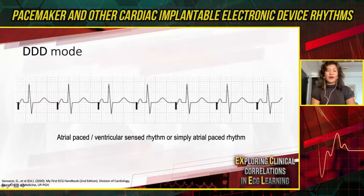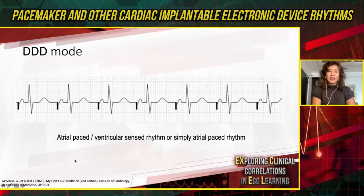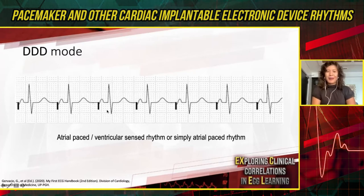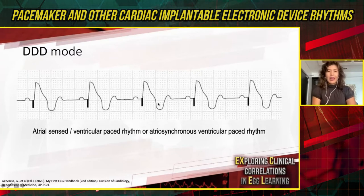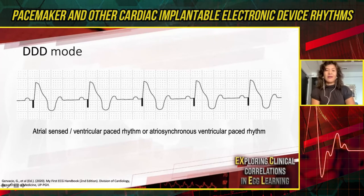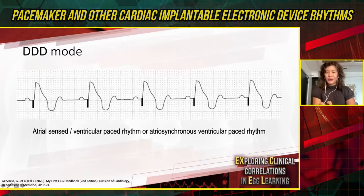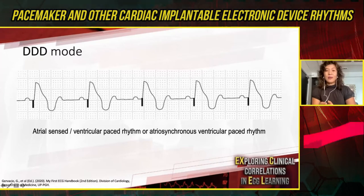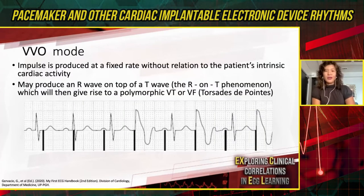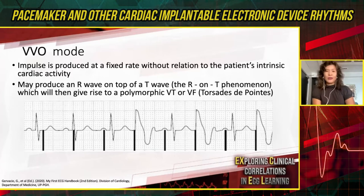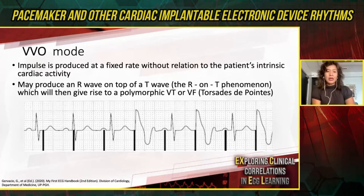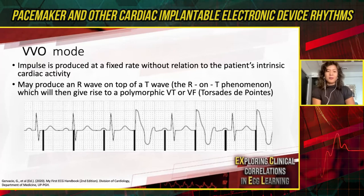Another DDD example shows pacing in the atrium and sensing in the ventricle, which looks like an AAI pacemaker tracing. A third DDD example shows sensing in the atrium and pacing in the ventricle — this is termed atrial-synchronous ventricular-paced rhythm, which you can write on your ECGs for a sense-and-pace rhythm. Finally, in VOO mode — the magnet mode used in the operating room so the pacemaker does not sense electrocautery — you see straight pacing without sensing.